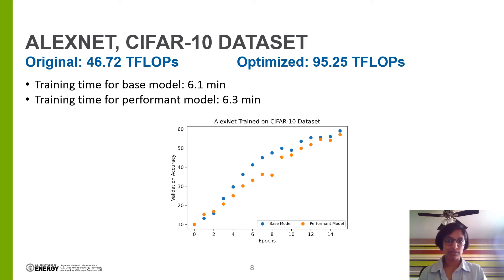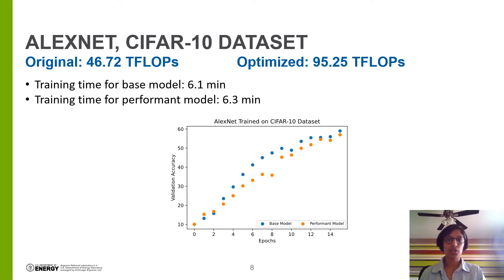Looking at the graph, you will see the original model's accuracy in blue dots and the high-FLOPs model in orange dots over the validation image set while being trained on the CIFAR-10 dataset. Both the orange and blue dots closely follow one another, indicating that there is no tradeoff in accuracy due to choosing the high-FLOPs model. Additionally, it takes the same amount of time to train both models.